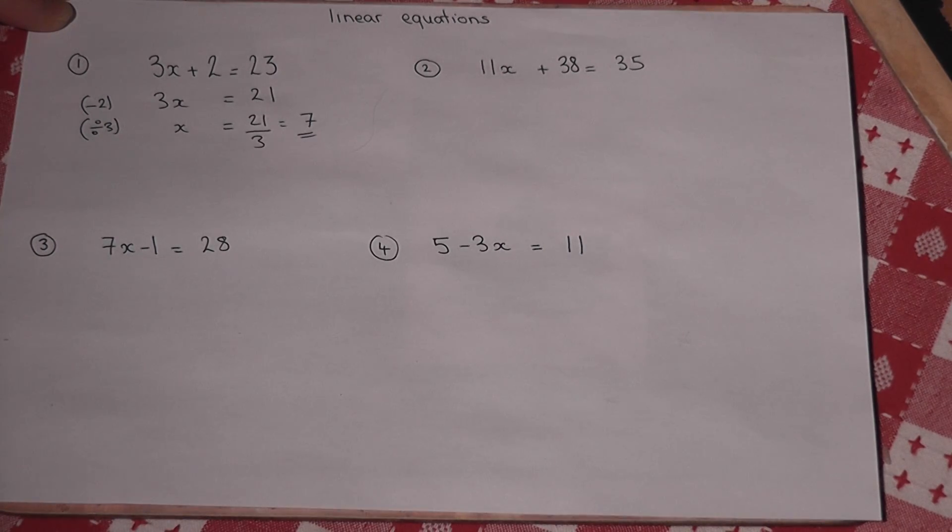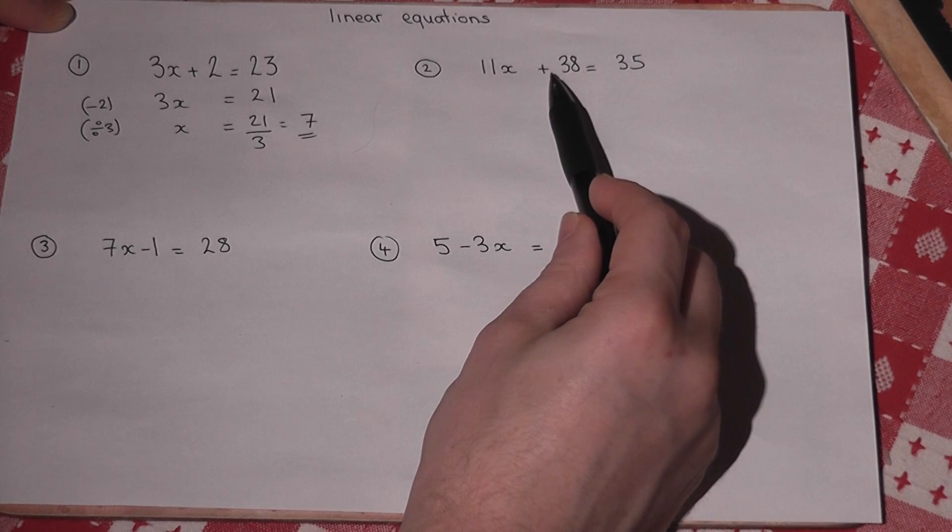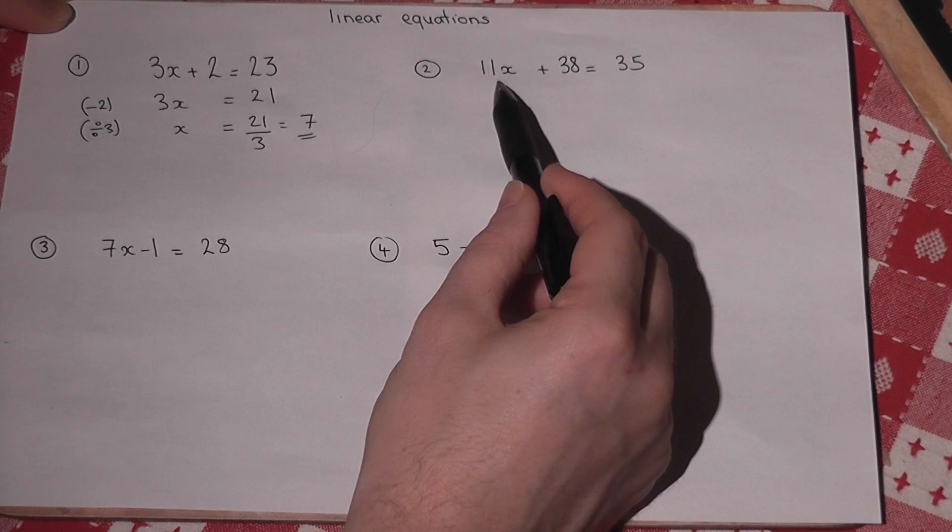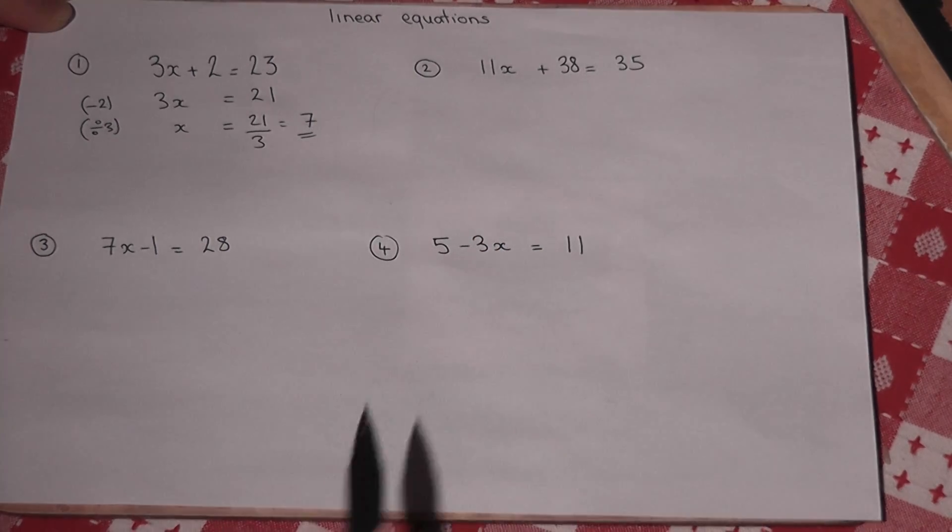So in the second example 11x plus 38 equals 35. So we want x by itself. We begin by taking away the 38 that's on the left hand side.